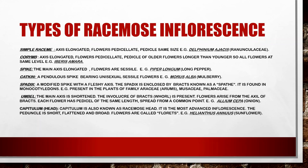There are types of racemose inflorescence. The first is the simple raceme, where the axis is elongated, flowers are pedicellate, and all pedicels are the same size. Pedicellate means the flowers have a stalk attaching them to the stem. It occurs in Delphinium, family Ranunculaceae. The second type is the corymb, where the axis is elongated, flowers are pedicellate, and pedicels of older flowers are longer than younger ones, bringing all flowers to the same level. Example: Iberis amara.